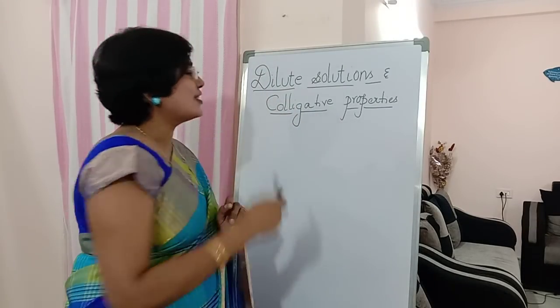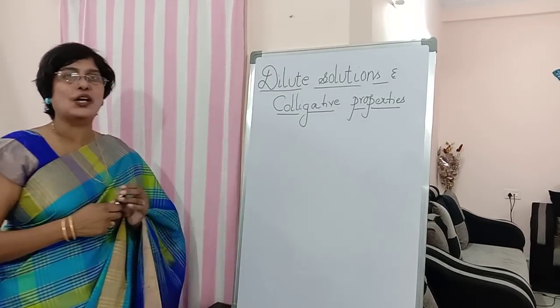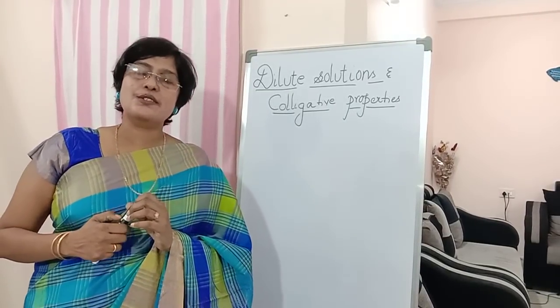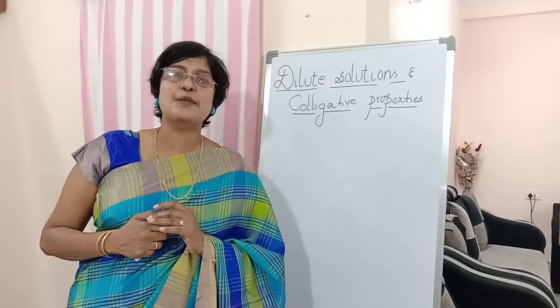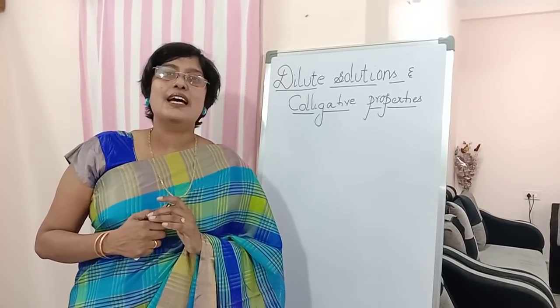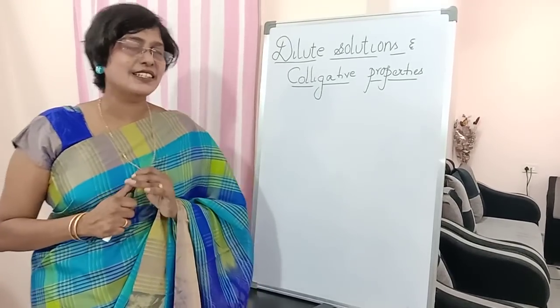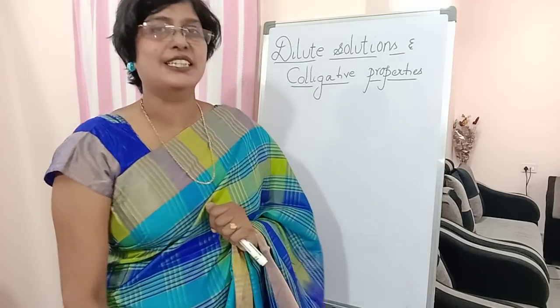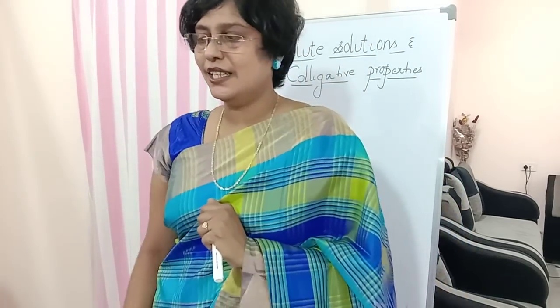Here we begin with dilute solutions and colligative properties. This is the unit we are going to start with in this academic year 2020-2021. Before going into the chapter, I want to ask you something. All of you will be having sugar and salt — the common ingredients in your kitchen. Have you cooked something? Try cooking something at home.